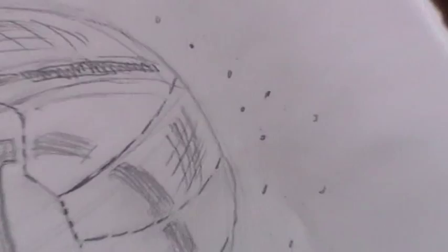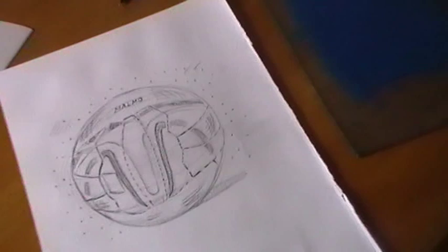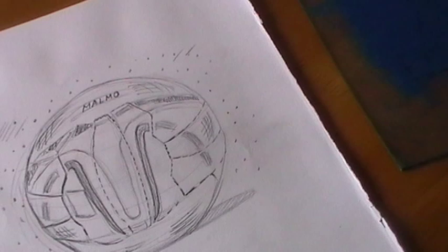Now what we're going to do is zoom in again and then you can see some of the marks I've used on the football - some dots in the background, some diagonal marks on the football itself.